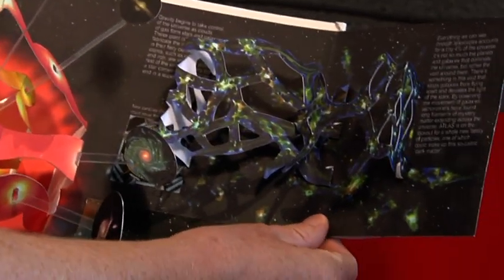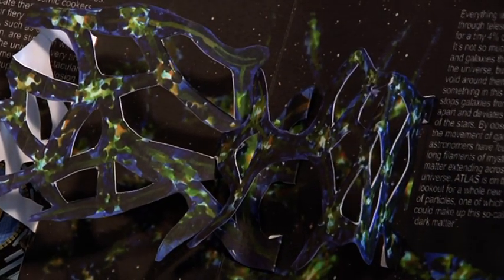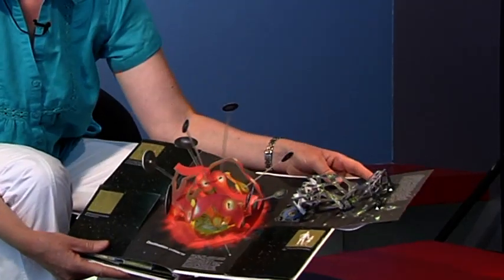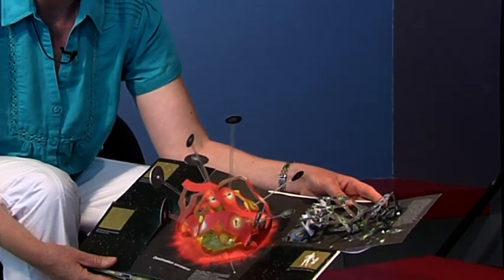But also in the universe there's a problem of missing mass. So one thing we're hoping to do at ATLAS is to actually make particles of dark matter so we can understand what the majority of the universe is made of. And if you want to know about all the other mysteries that ATLAS is going to solve, well you're going to have to buy the book.